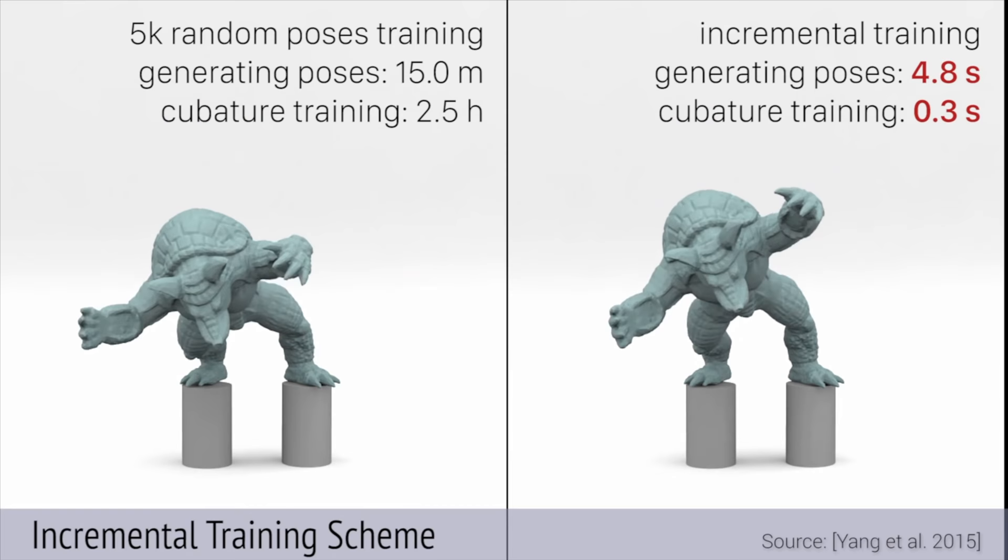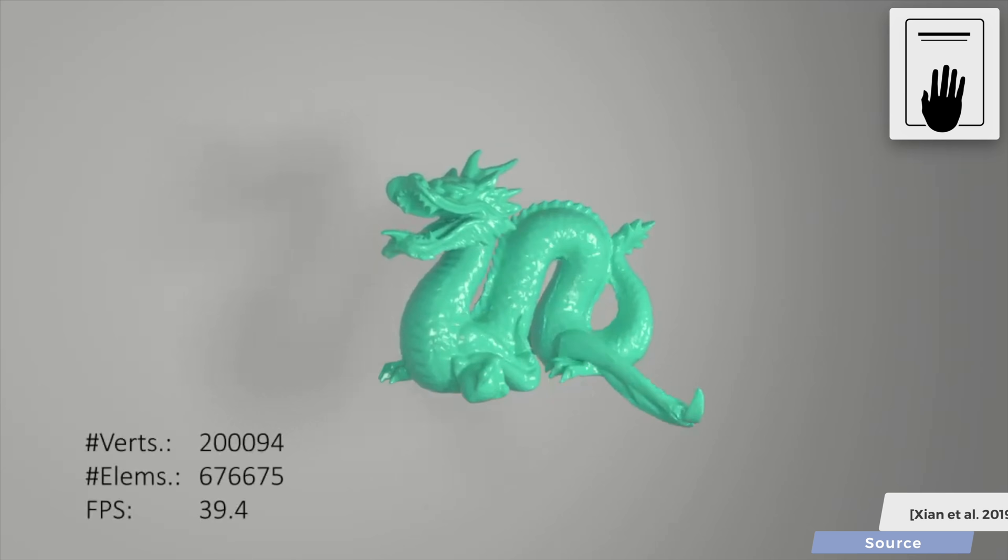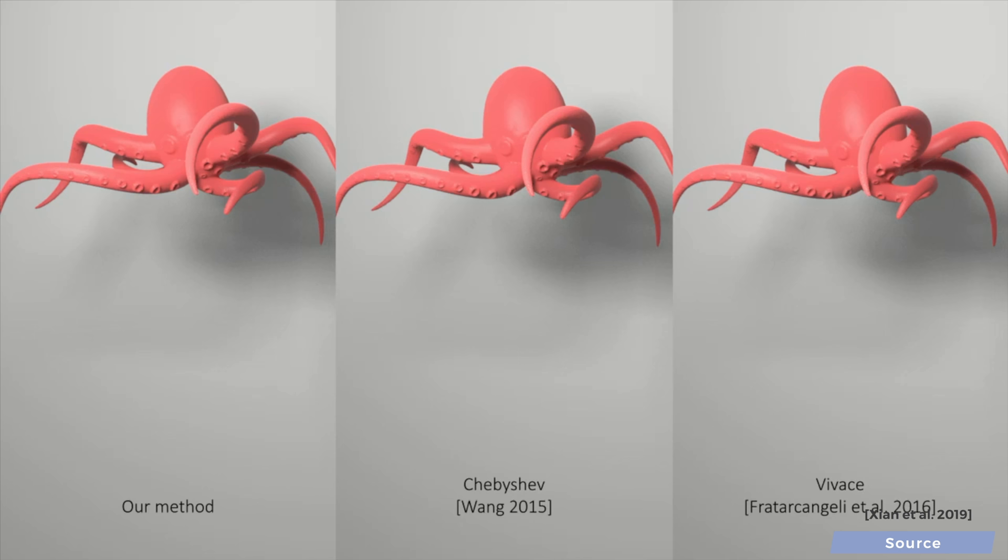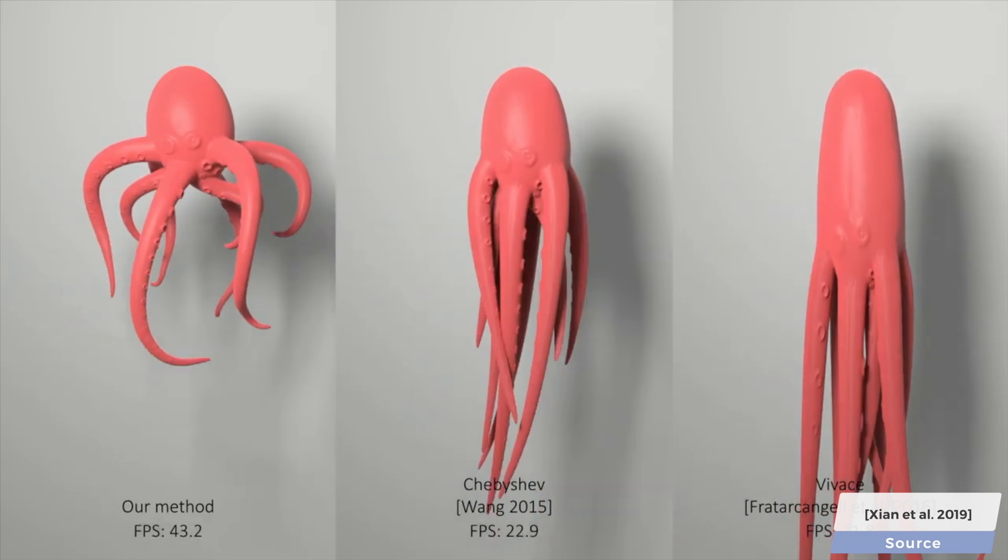And now, hold on to your papers because this new method runs on your graphics card and hence can perform these deformable simulations at close to 40 frames per second. And in the following examples, you will see something even better. A killer advantage of this method is that it is also scalable.